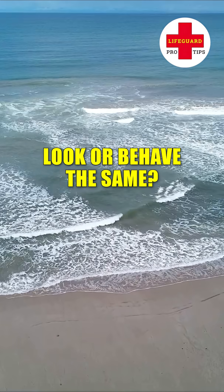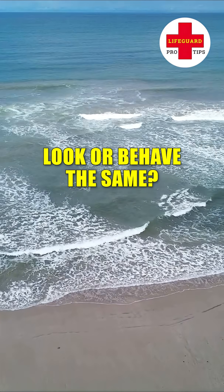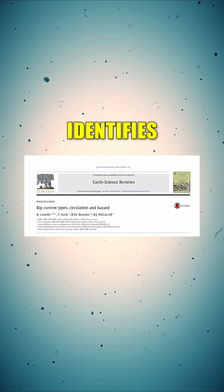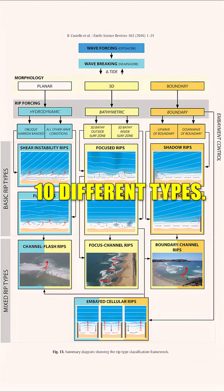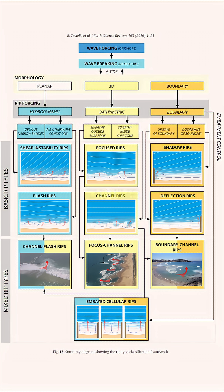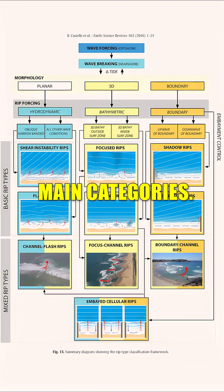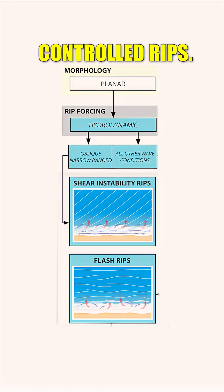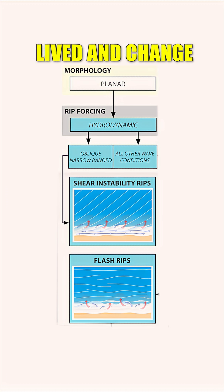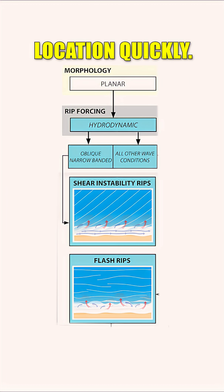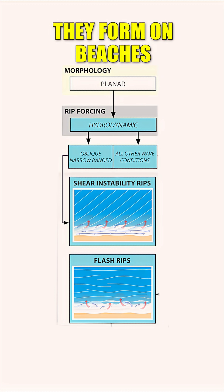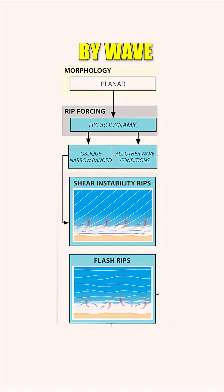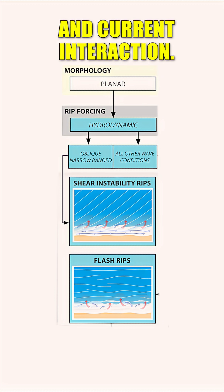Not all rip currents look or behave the same. A scientific study identifies 10 different types, classifying them into three main categories. Hydrodynamically controlled rips are short-lived and change location quickly. They form on beaches with uniform shorelines and are driven mostly by wave and current interactions.